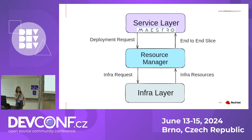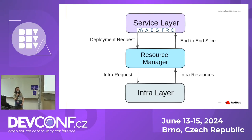Here we have a workflow of how the whole system would run. The service layer manages the service life cycle using Mystro, a service orchestrator. When you finish writing the application, a deployment request is sent to the resource manager. It looks at what resources you need, goes to the infrastructure layer, collects them together, makes an end-to-end slice of all the resources you need, and the application is then deployed across them.